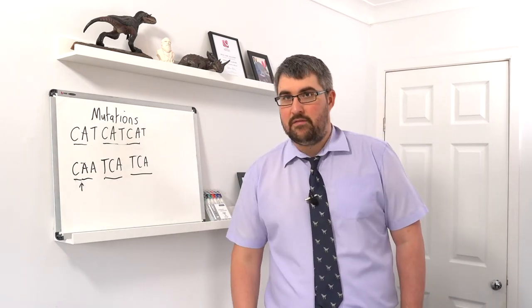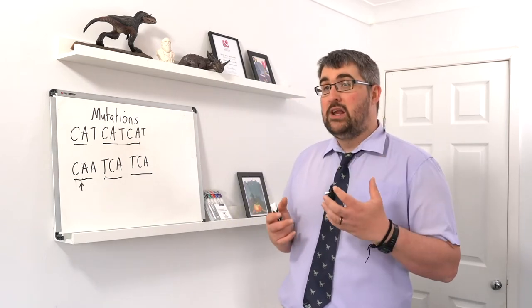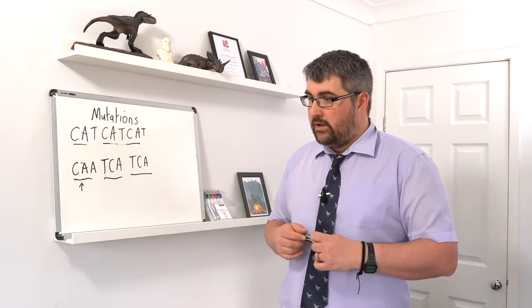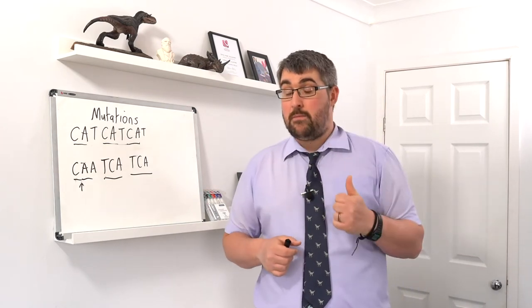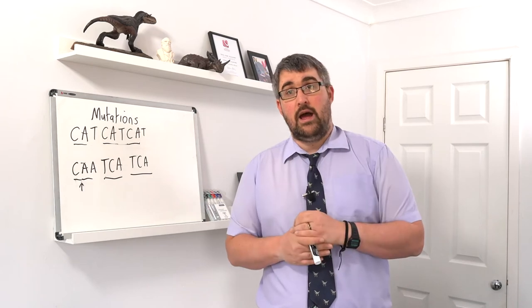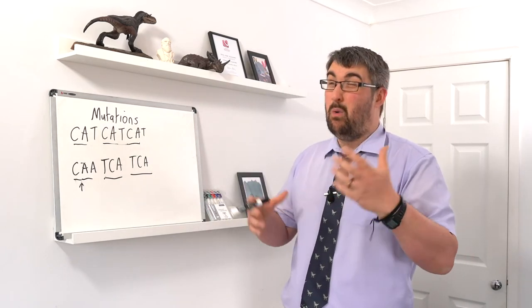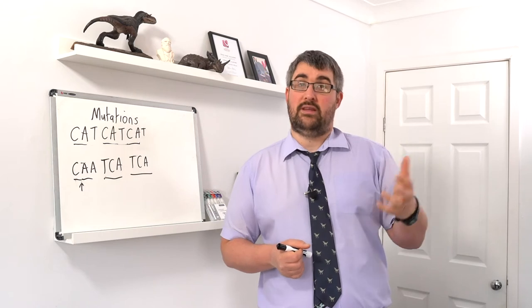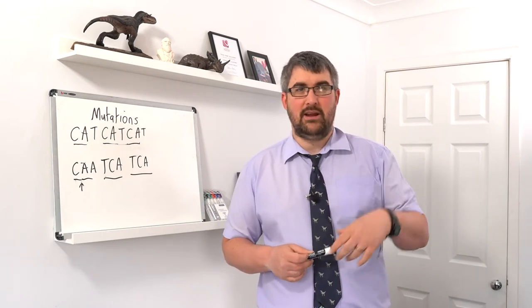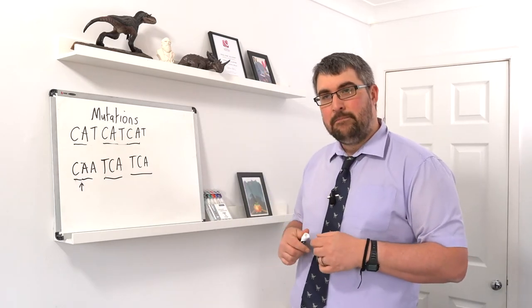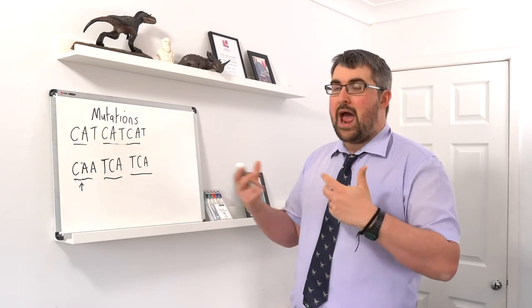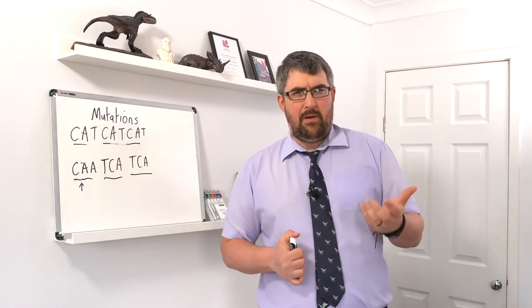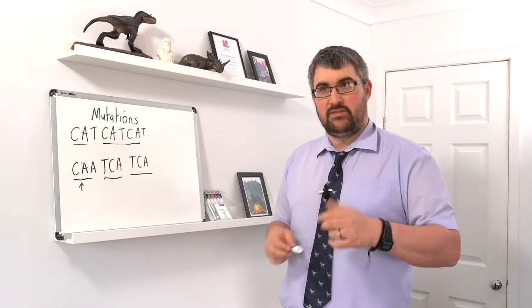Gene mutations aren't the only type. We can also have chromosomal mutations — changes in the number of chromosomes in our gametes. Chromosomes might fail to separate in meiosis, which we call non-disjunction, potentially doubling the chromosome number. In humans, Down syndrome is where a person has an extra chromosome. In animals, having extra or fewer chromosomes tends to be quite negative.